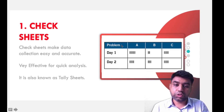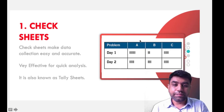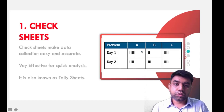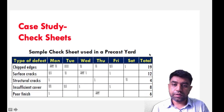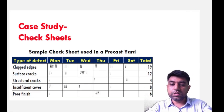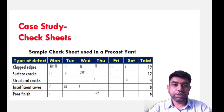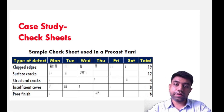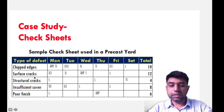In the tabular representation of a check sheet, on the left row we write the problem, and across the columns we write different activities. For each activity we can indicate occurrences using tally marks. Let us take an example so you get a better idea. This example is from a casting industry where we represent the types of defects found in the casting product.